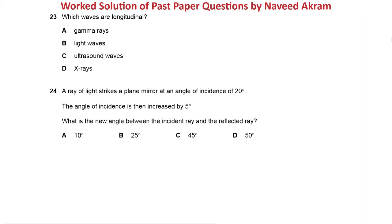The next question is question 24 from May/June 2019 Paper 1 Variant 1. A ray of light strikes a plane mirror at an angle of incidence of 20 degrees. The angle of incidence is then increased by 5 degrees. What is the new angle between the incident ray and the reflected ray? Please pause the video and try to solve this. The angle of incidence becomes 25 degrees.